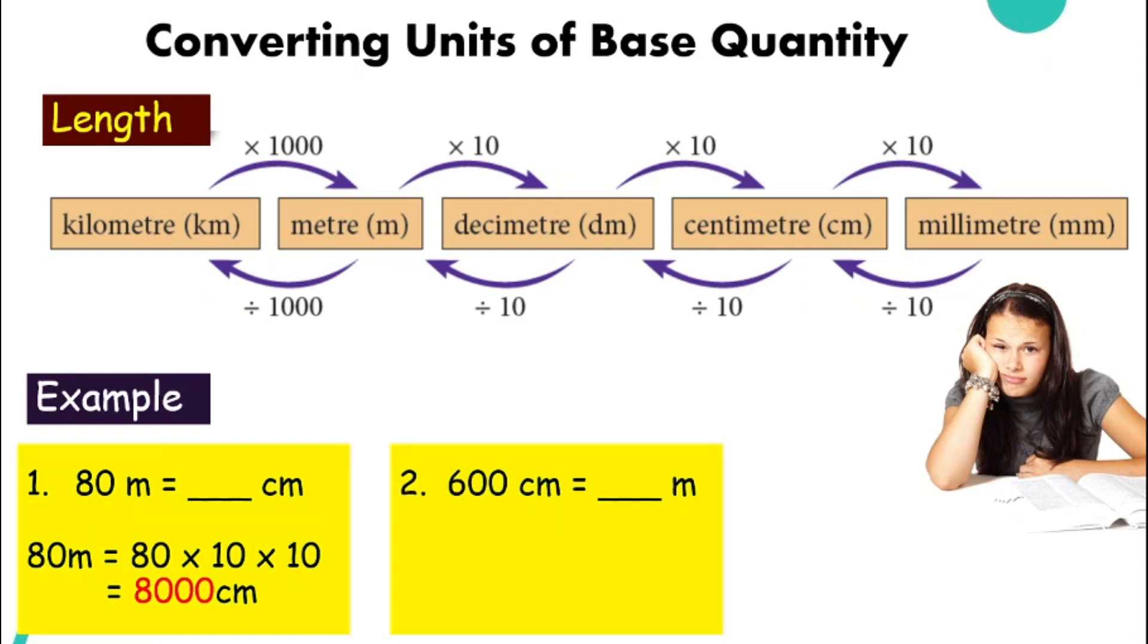How about centimeter to meter? This time we go backward and we need to get two steps as well. So 600 divided by 10, divide by another 10 and we will get six meter.